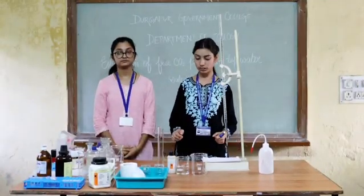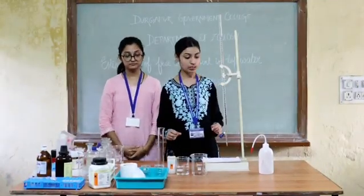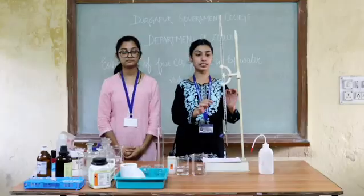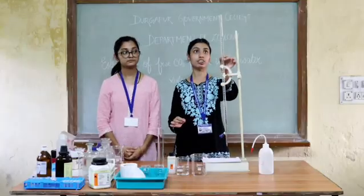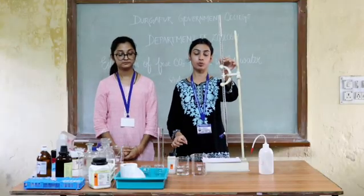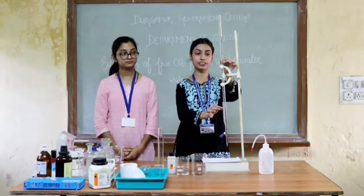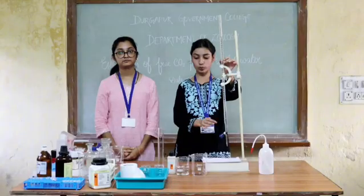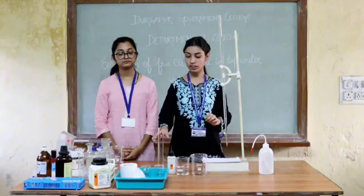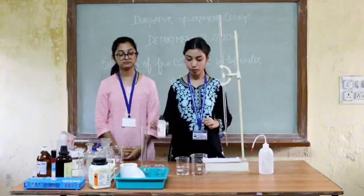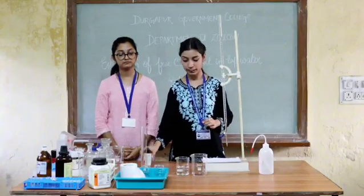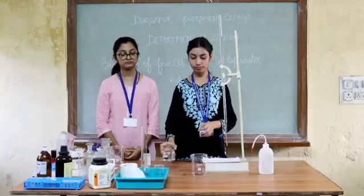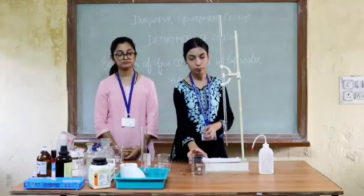Now we will do the procedure. The materials we are using are: a burette which has 0.0 N of NaOH, a measuring cylinder, a phenolphthalein indicator, tap water, and a beaker.